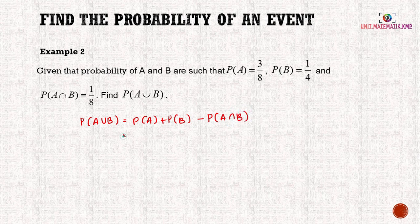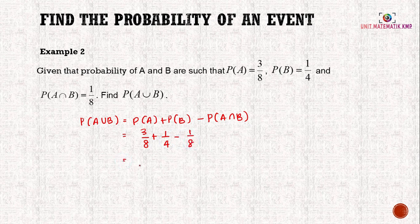We substitute the probabilities given: 3/8 + 1/4 - 1/8. Using the calculator, the answer is 1/2.